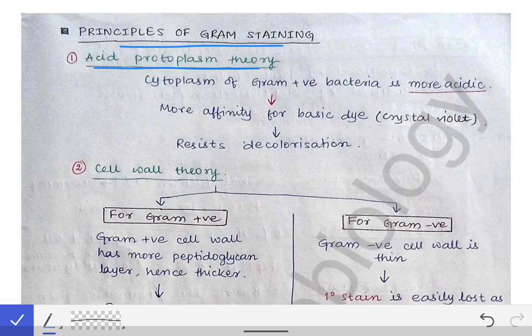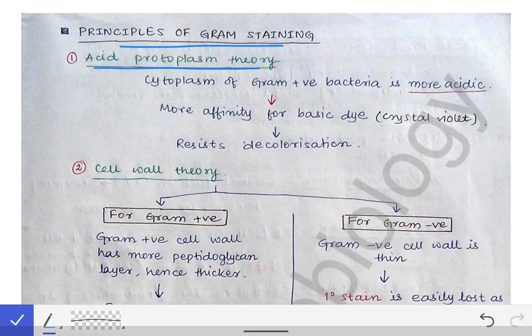First, we use the primary stain — that is gentian violet or crystal violet. Then the second step is the mordant, which is Gram's iodine. The third step is decolorization, done with acetone or alcohol. The fourth step is the counter stain, done with carbol fuchsin or safranin. These are the four basic steps and reagents used in the Gram staining of bacteria.